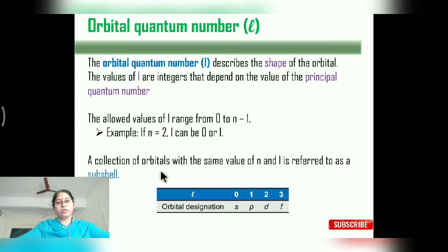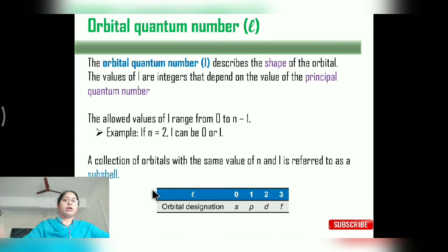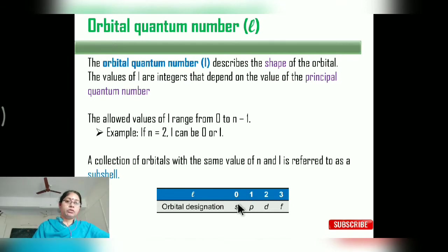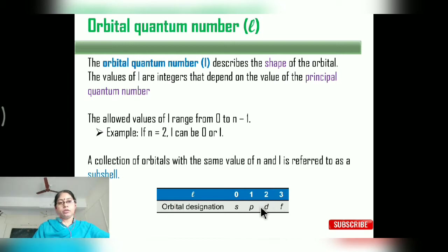A collection of orbitals with the same values of n and l is referred to as a sub-shell. If l equals 0, it represents the s sub-shell. If l equals 1, it represents the p sub-shell. If l equals 2, it represents the d sub-shell. And if l equals 3, it represents the f sub-shell.